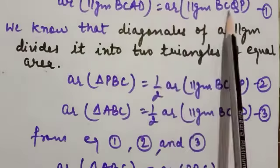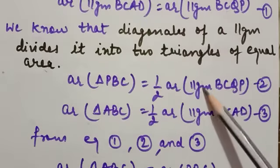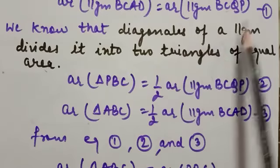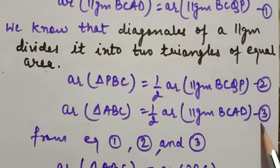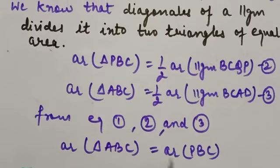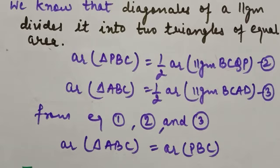Since the two parallelograms are equal in area (from Theorem 9.1), their halves are also equal. Therefore, from equations 1, 2, and 3, both triangles are equal in area. This completes Theorem 9.2. Hope you understood these two theorems and enjoyed this lecture. Thank you, have a nice day!